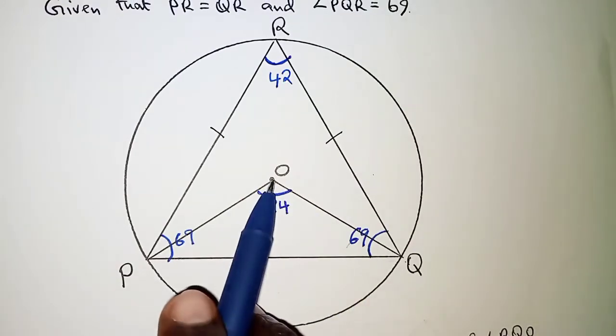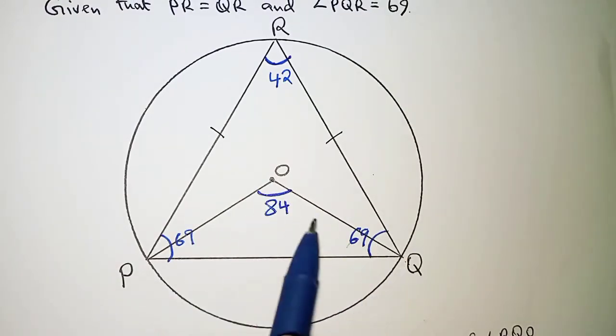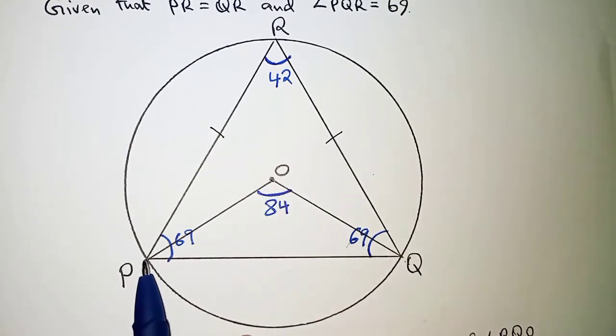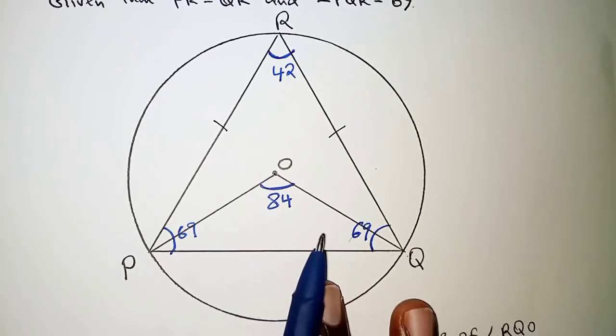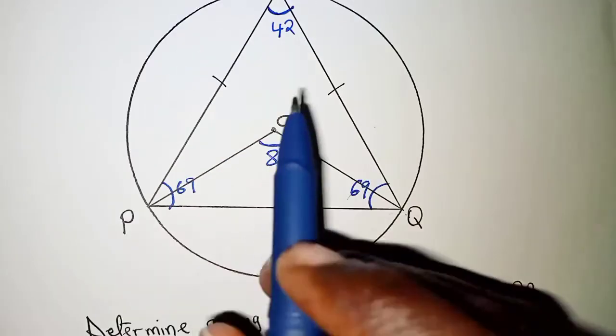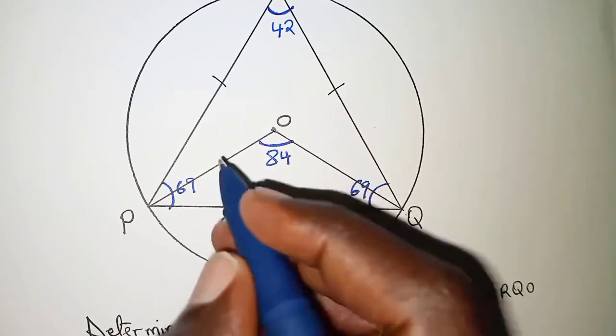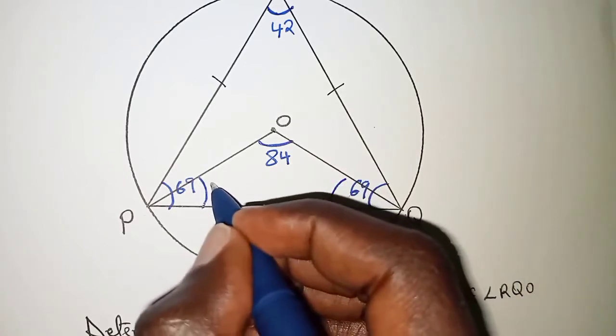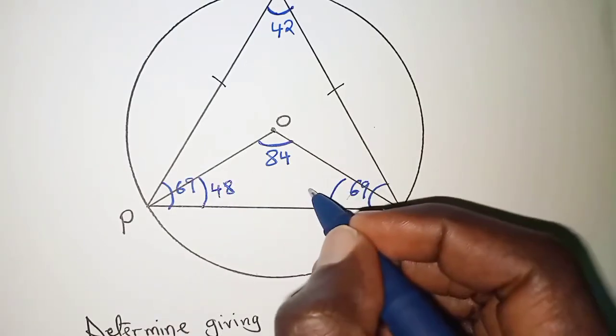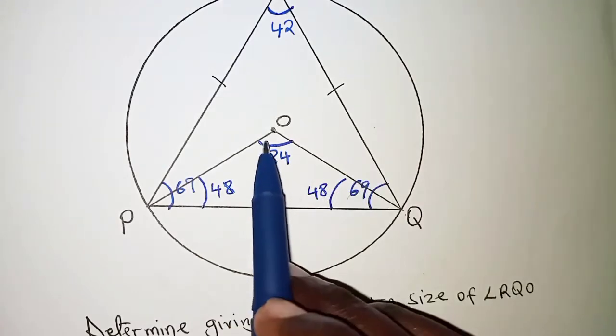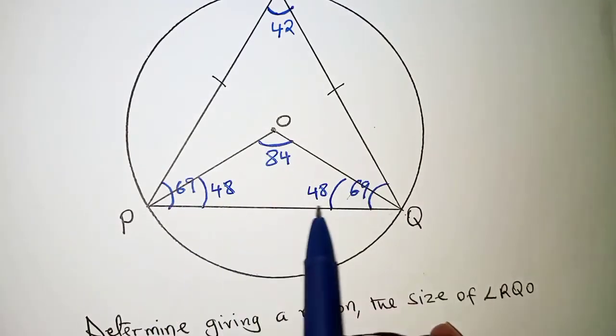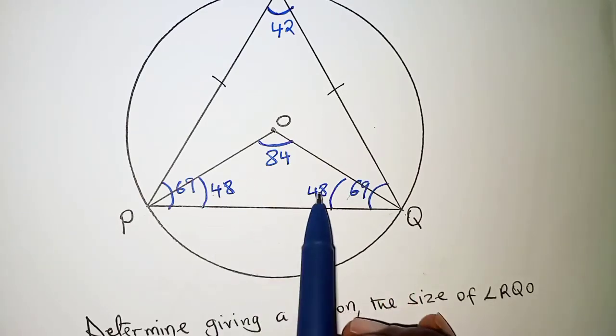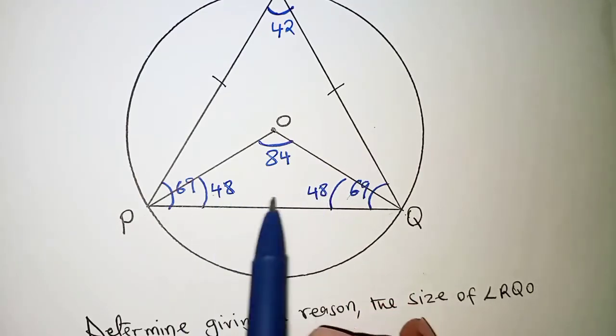Another thing again, we have OQ and OP as radii of the circle. It means that triangle PQO is an isosceles triangle. So if the angle at O is 84, then we also need to note that the base angles should be equal. So we have here 48 and here also 48, so that the sum of angles in a triangle should be 180.